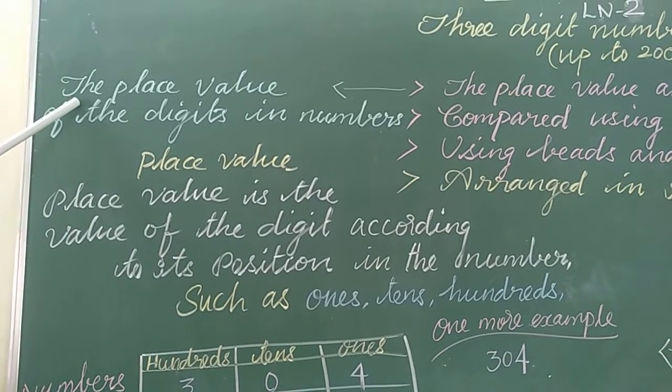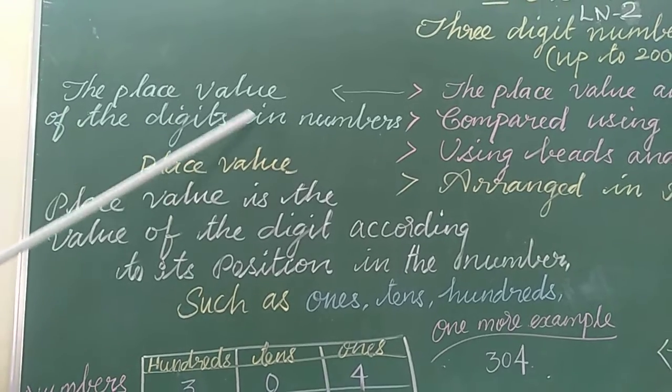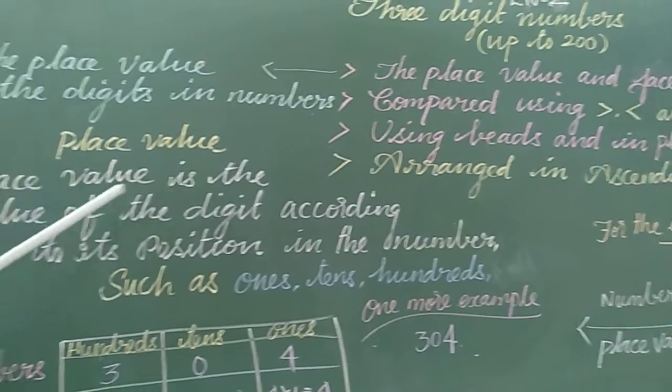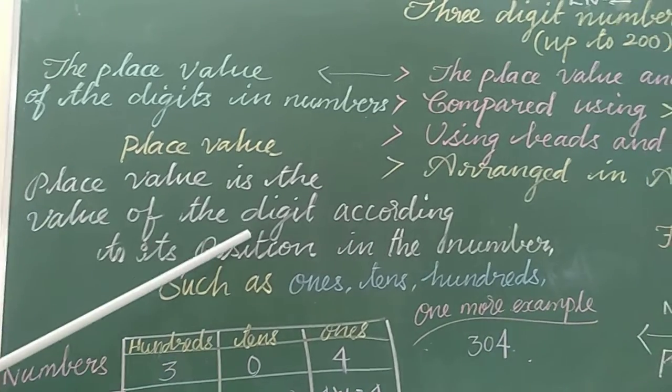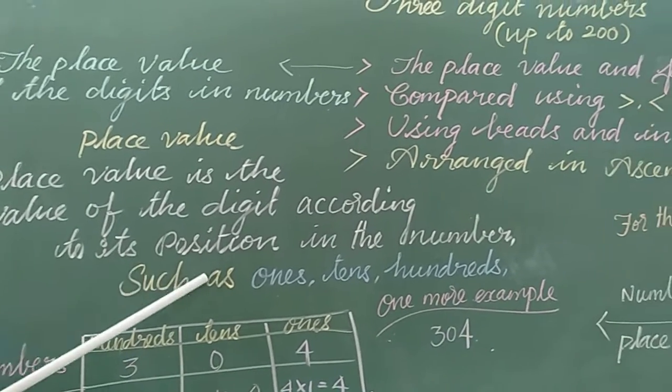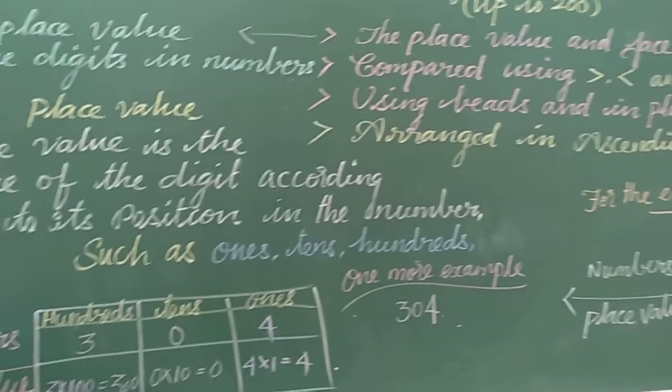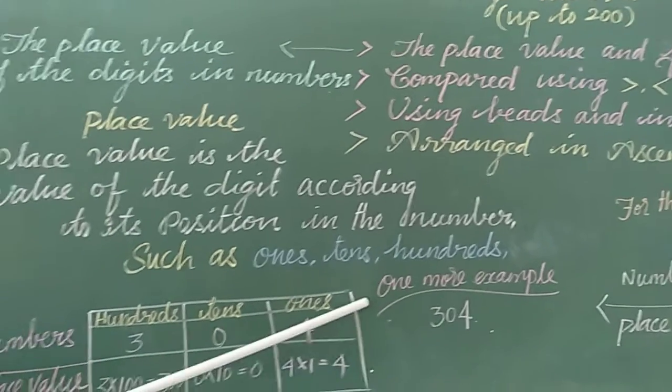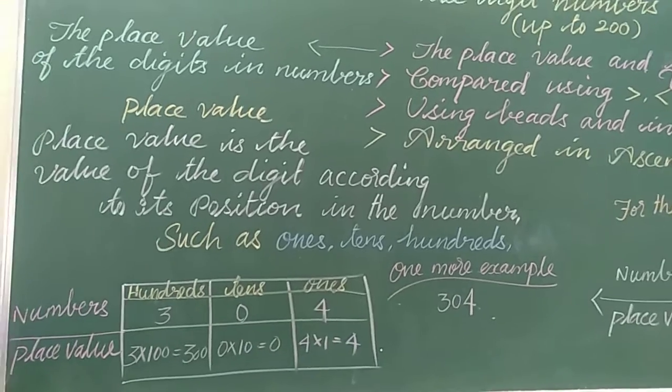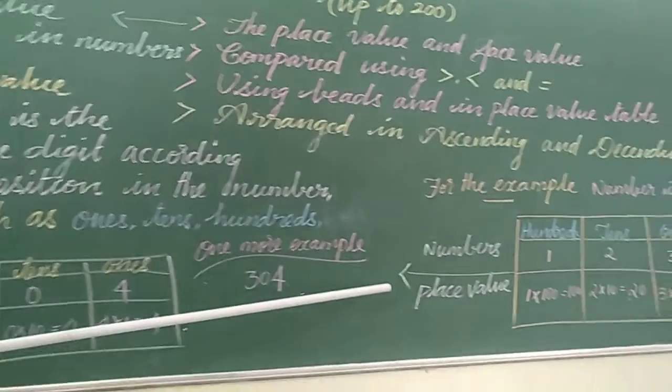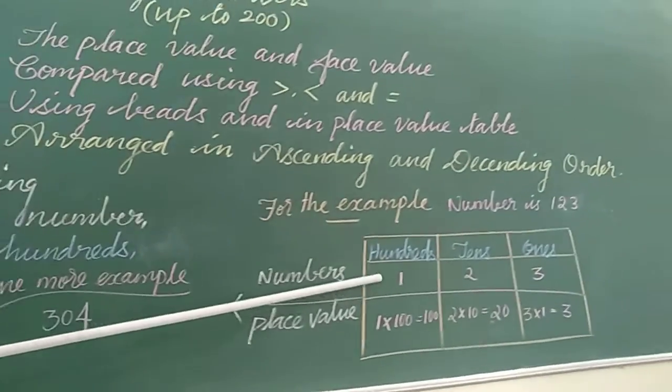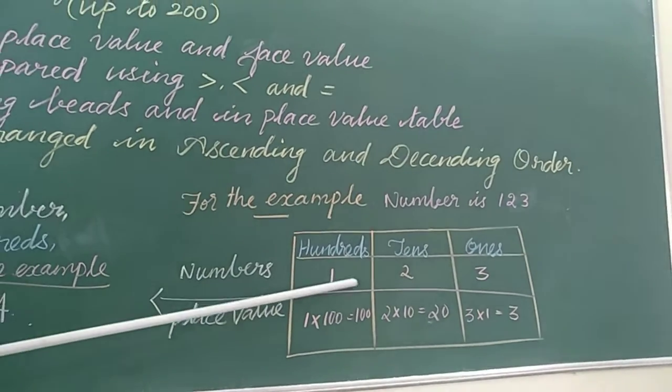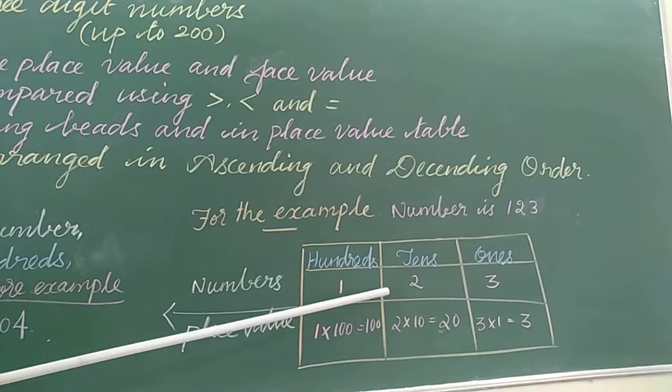The place value. The place value of the digits in numbers. What is place value? Place value is the value of the digit according to its position in the numbers, such as 1s, 10s, 100s. Now, I am going to give an example for you. For the example number is 123. Students, first you divide 3 columns to make numbers and place value. The first one is 100s, the second place is 10s, the third one is 1s.